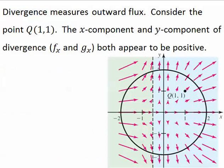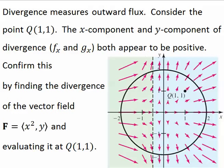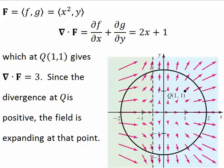Divergence measures outward flux. Consider the point q. Can you find it in the first quadrant here? Here, the x component and the y component of divergence both appear to be positive. Let's confirm this by finding the divergence of the vector field and then evaluating it at the point q. The divergence of the vector field is 2x plus 1, which at the point q gives a value of 3.